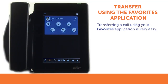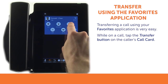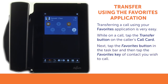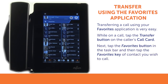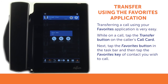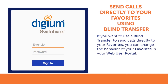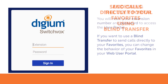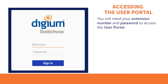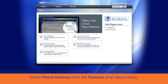If you have favorites set up with your often-used phone numbers, then transferring a call is very easy. During an active call, tap the transfer button to start the transfer. Next, tap the favorites button from the taskbar, and then tap the favorite key for the contact to whom you wish to transfer the call. This will start an assisted transfer to that favorite. If you want to use a blind transfer to send calls directly to your favorites, you can change the behavior of your favorites in your web user portal. To access the user portal, you will need your extension number and password. If you do not have this information, contact your system administrator.